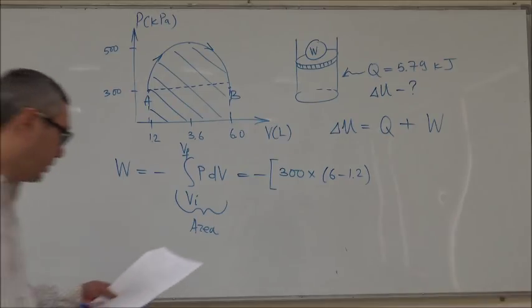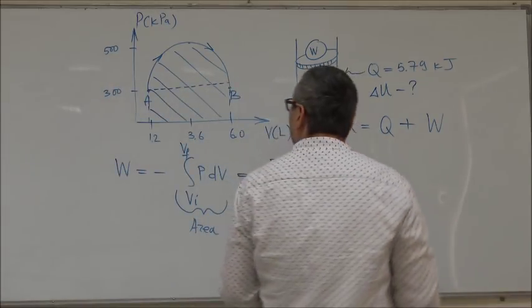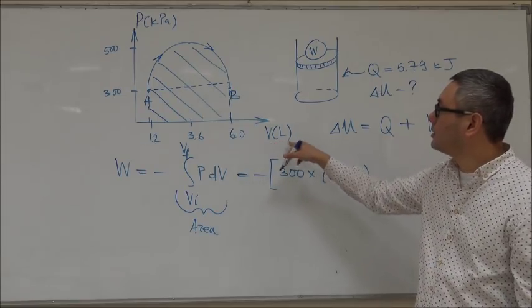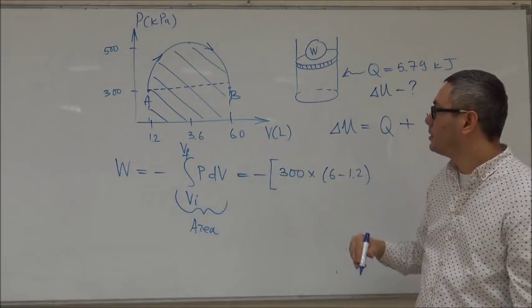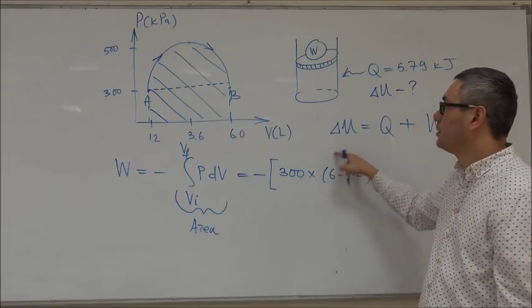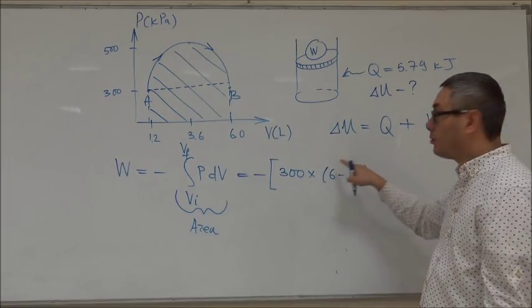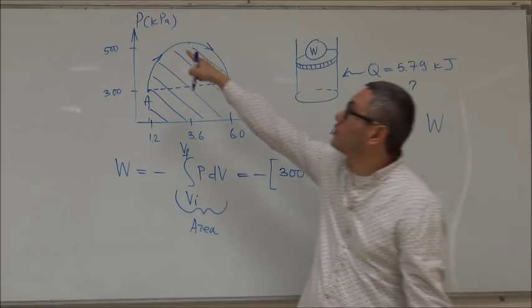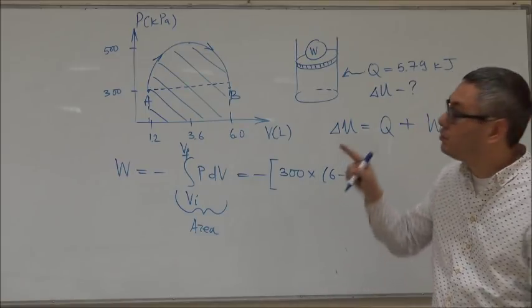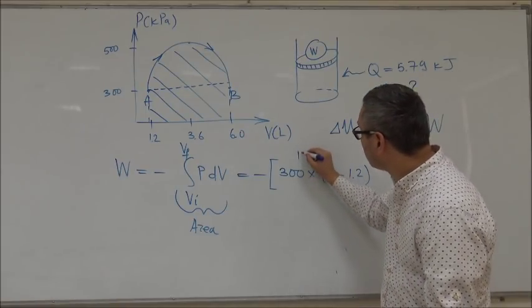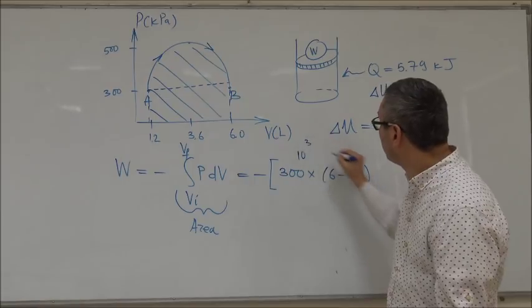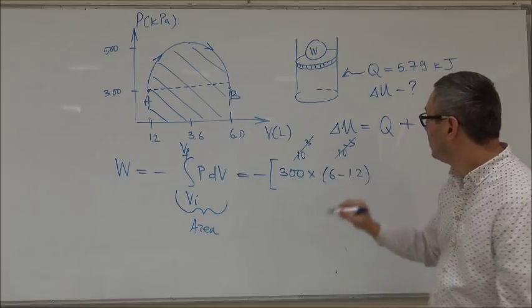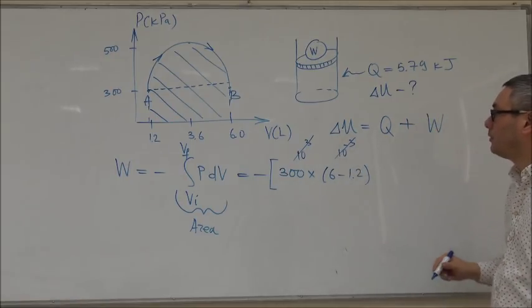So that is the area of the rectangular part. And if you note here the volume is given in liters, when you convert it into meter cubed you get 10 to the minus 3. And for the pressure you have 10 to the power 3, so these two tens will cancel. When you convert it into SI units, these two will cancel. So this would be the area, if you calculate that this part gives you 1440 joules.